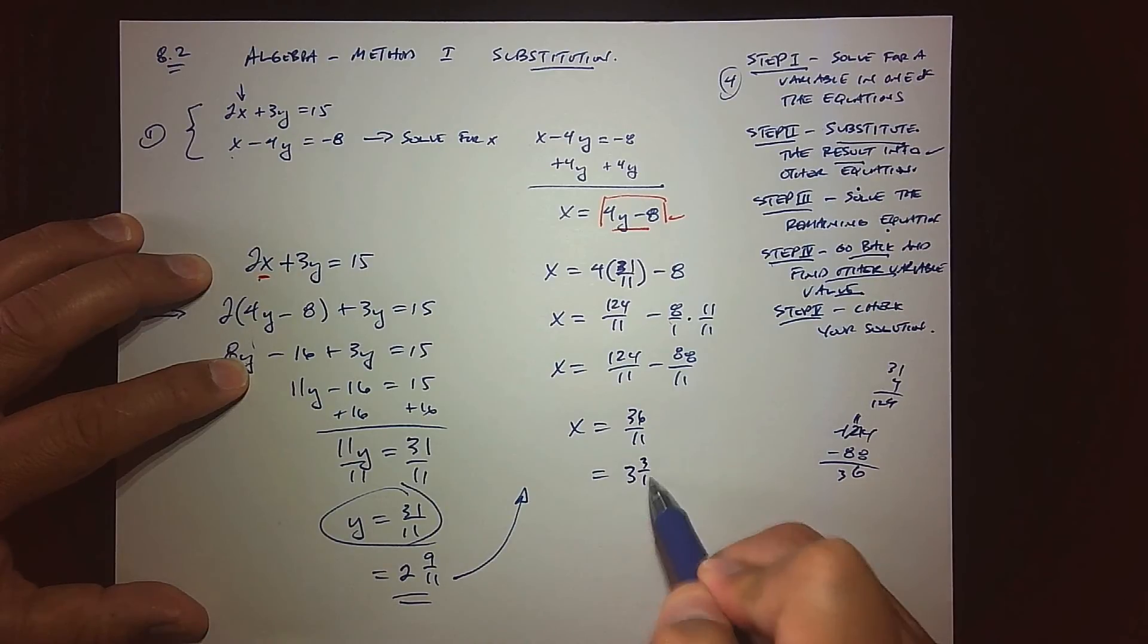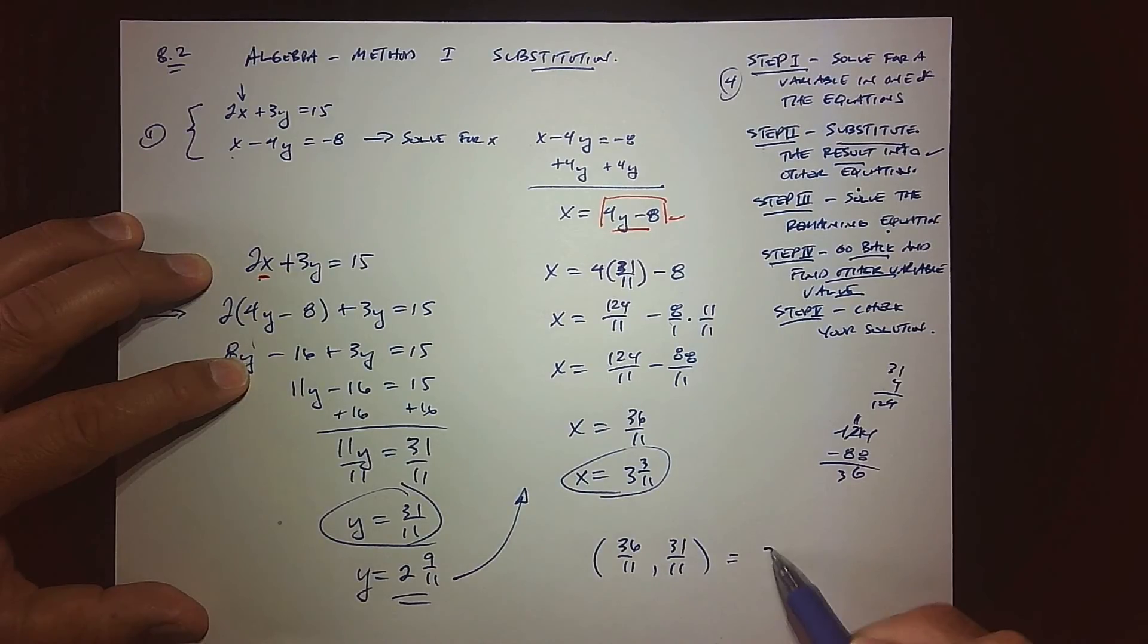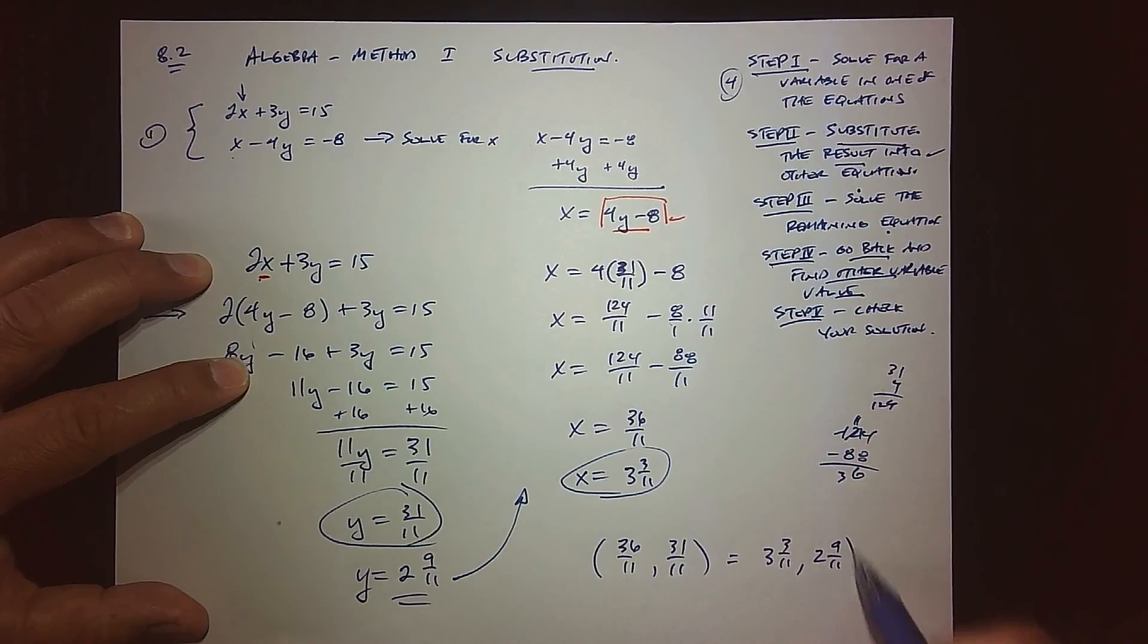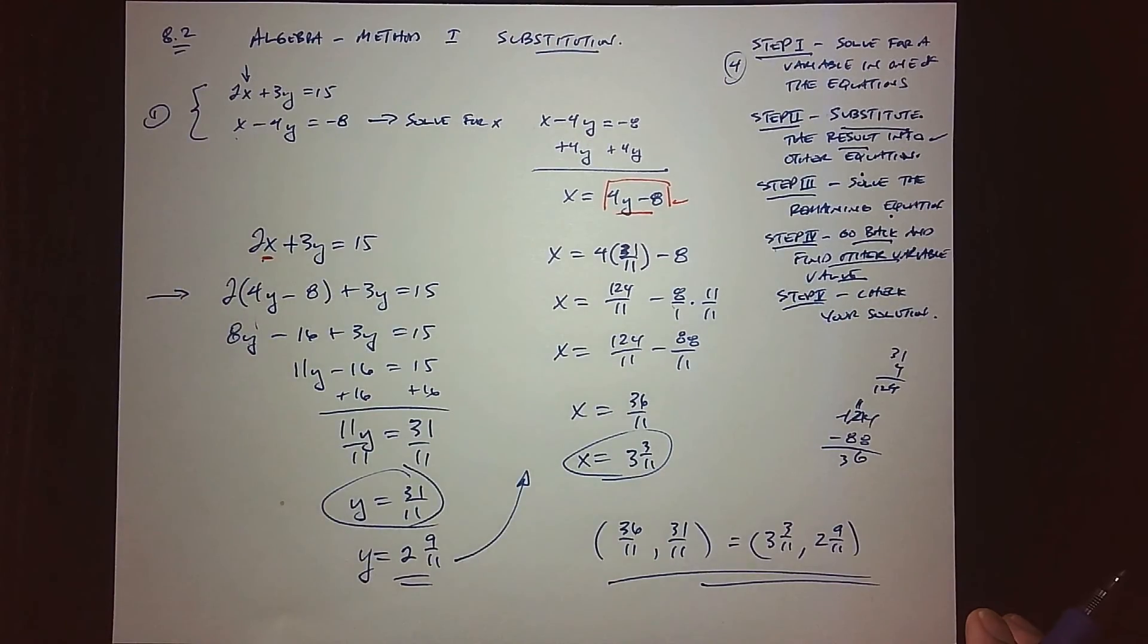Our ordered pair that solves this equation is basically 36 over 11 comma 31 over 11, or in mixed number form this would be 3 and 3/11 comma 2 and 9/11. There is the solution to that system. Let me go back to that last graph. Here's what the graph looked like when we graphed this system.